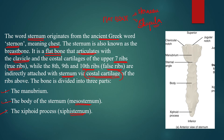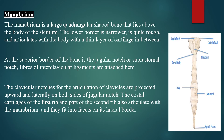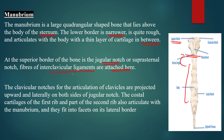The manubrium is a large quadrangular shaped bone that lies above the body of the sternum. It is the largest part of the sternum bone. Its lower border is narrower and rough, and it articulates with the body with a thin layer of cartilage in between. At the superior border of the bone is the jugular notch, also known as the suprasternal notch, where fibers of the interclavicular ligaments are attached.